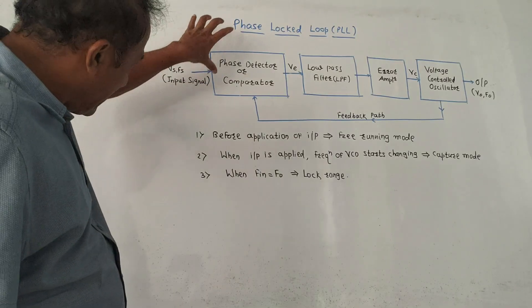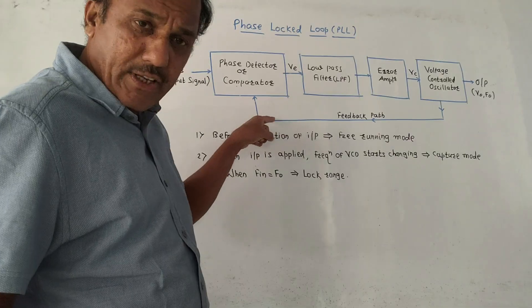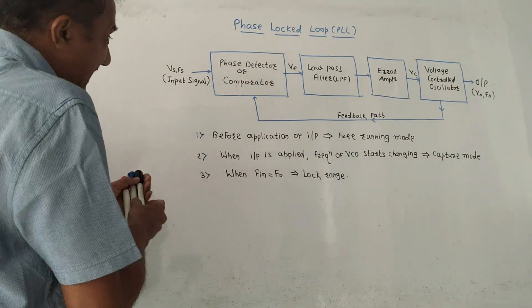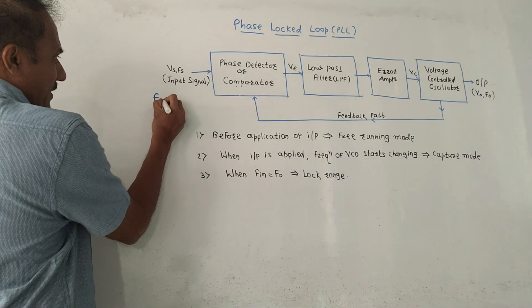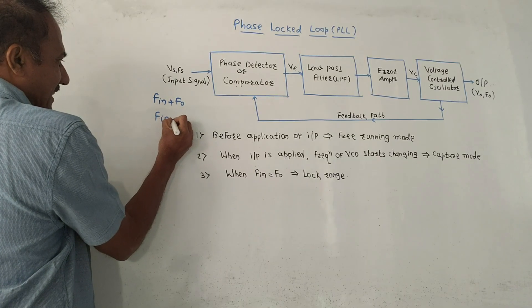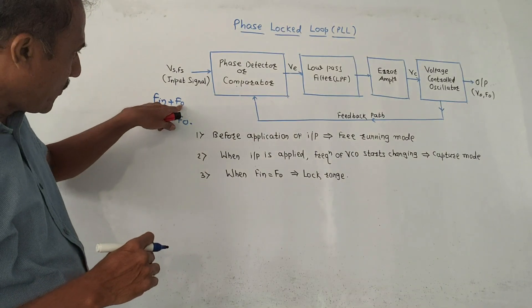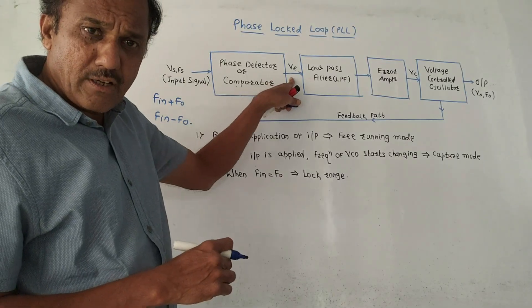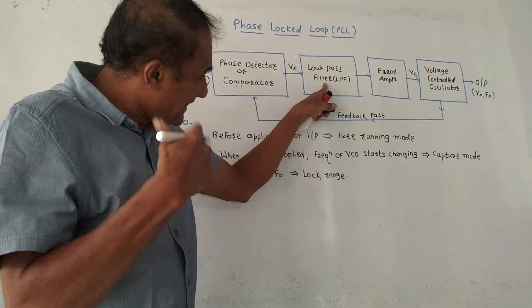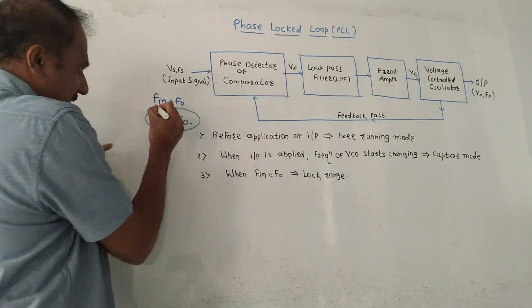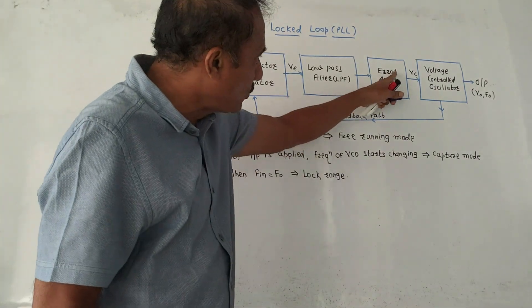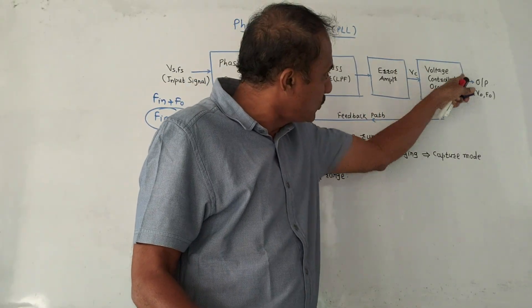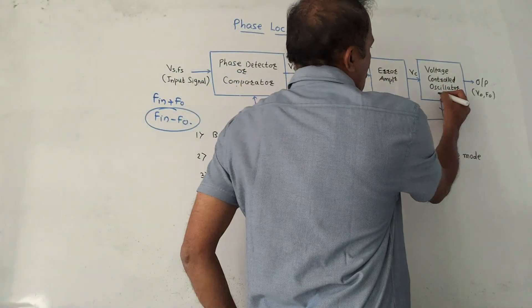When input is applied, initially this frequency and phase will be compared with the free running frequency of the VCO. The phase detector or comparator produces two signals: one is the sum signal F_in plus F_0, and the other is the difference signal F_in minus F_0. The low pass filter passes only the lower frequency F_in minus F_0 to the error amplifier, which amplifies it. The corresponding voltage VC is then used to drive or adjust the oscillations of the VCO.